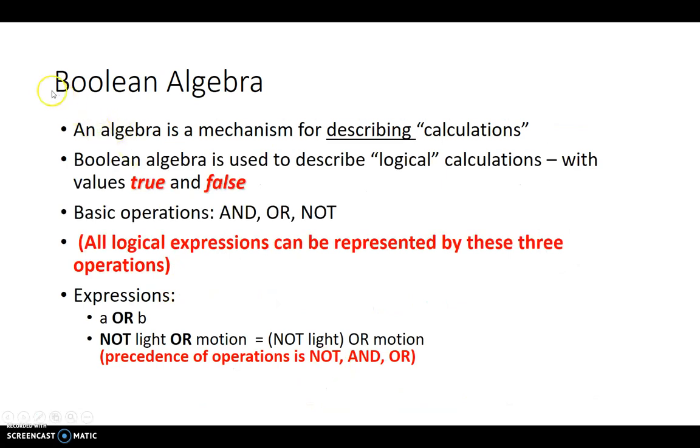So, quickly recap, this is called Boolean algebra. Boolean algebra is basically used to describe any logical calculations that a computer does that has the values of either true or false. Basic operations we've seen so far are AND, OR, and NOT logic gates. And pretty much any logical expression can be represented by these three operations. Logical expressions are things such as A or B, or NOT light or motion, and so forth.